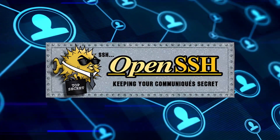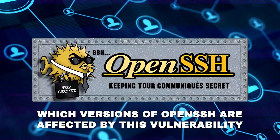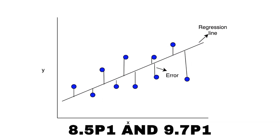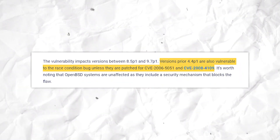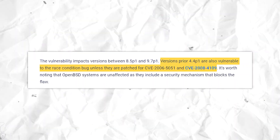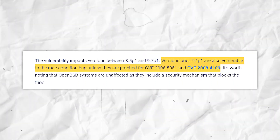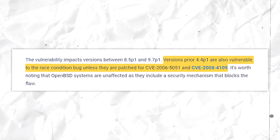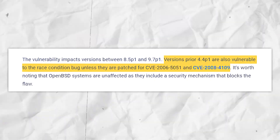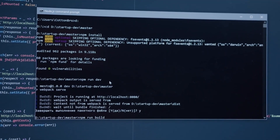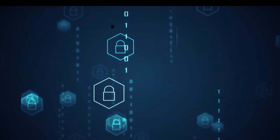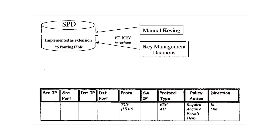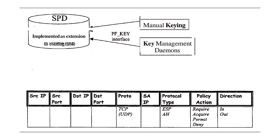The regression flaw impacts OpenSSH versions between 8.5p1 and 9.7p1, but that's not all. Versions prior to 4.4p1 are also vulnerable to this race condition bug unless they have been specifically patched for CVE-2006-5051 and CVE-2008-4109. It's a wide net that catches many systems in use to date. Interestingly, OpenBSD systems are unaffected because OpenBSD includes a security mechanism that effectively blocks this flaw.